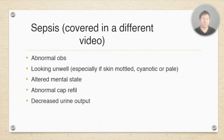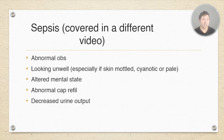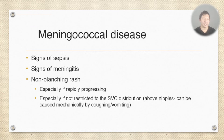If a child has abnormal observations, skin changes like mottling, or they look particularly pale and unwell, that's something to take seriously. Altered mental state is also important — if the parent says they're just not behaving like they normally do. Abnormal capillary refill — remember central, not peripheral cap refill — and decreased urine output are also signs of poor perfusion which could indicate septic shock.